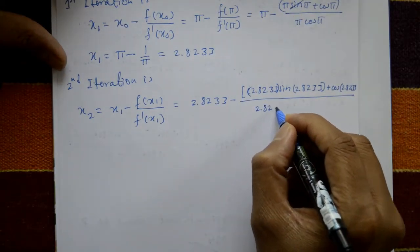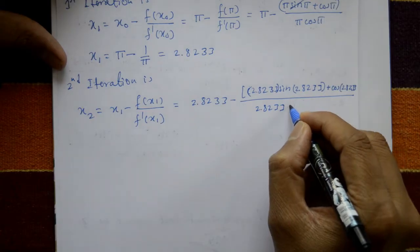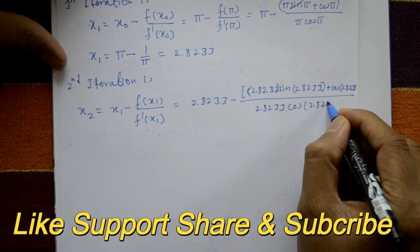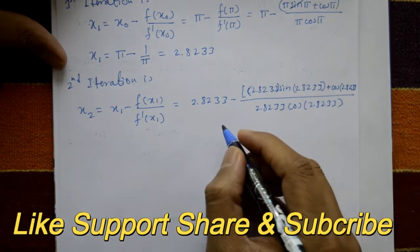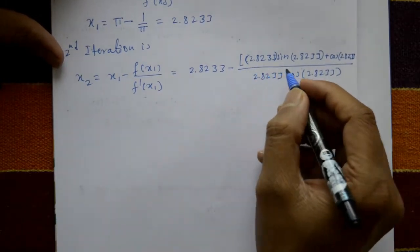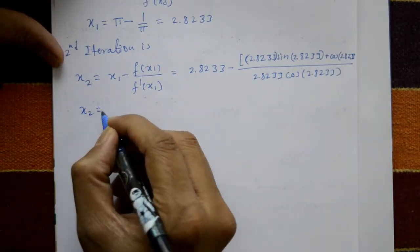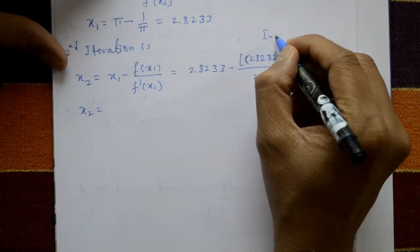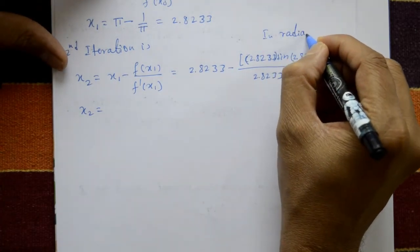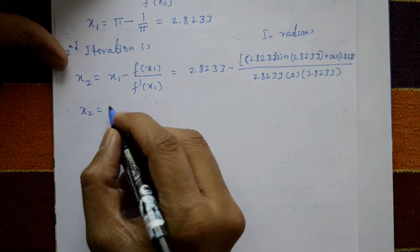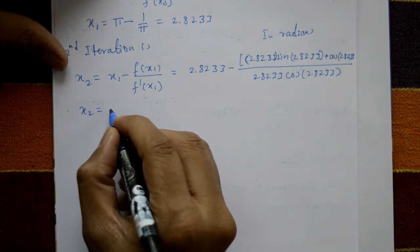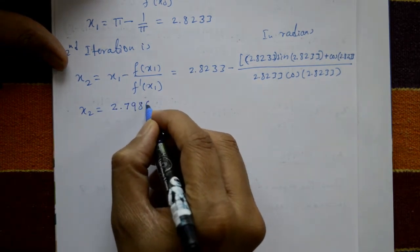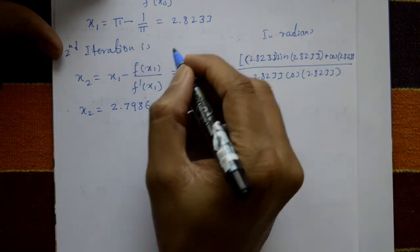Calculating in radian measure using a calculator, x₂ = 2.7986. The x₁ value was 2.8233 and x₂ is 2.7986 — the values are different, so we proceed to the next iteration.